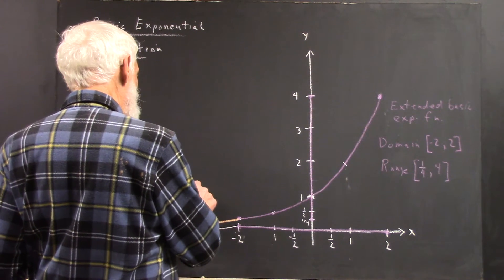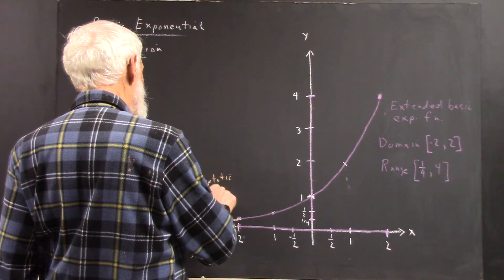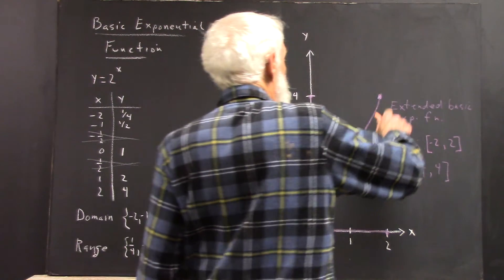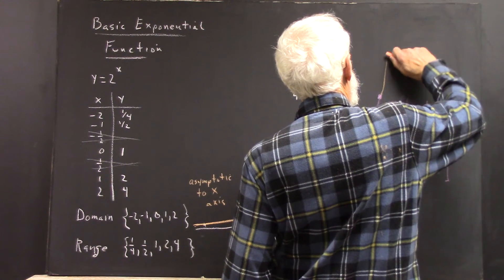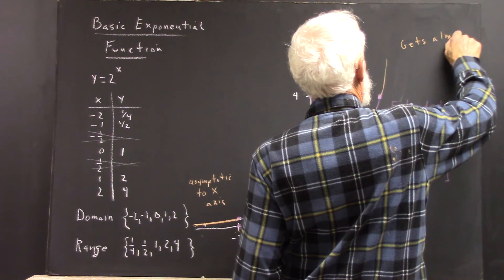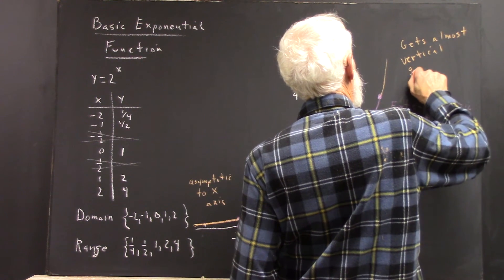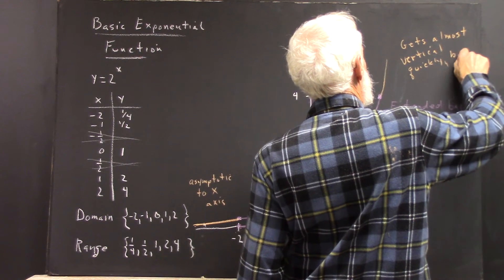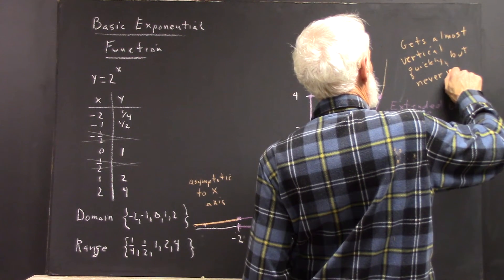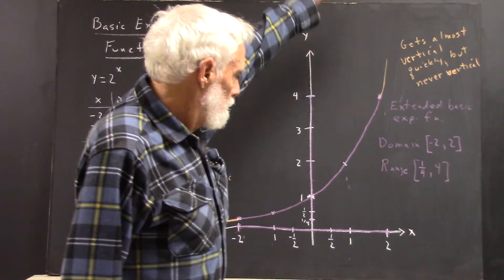And it's asymptotic to the x axis for negative values. For positive values, the graph gets almost vertical, quickly, but it's never vertical. So it increases very rapidly.